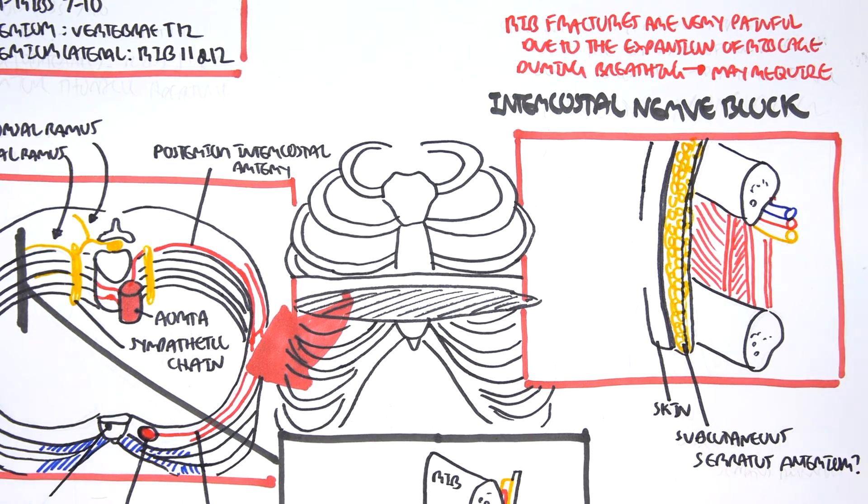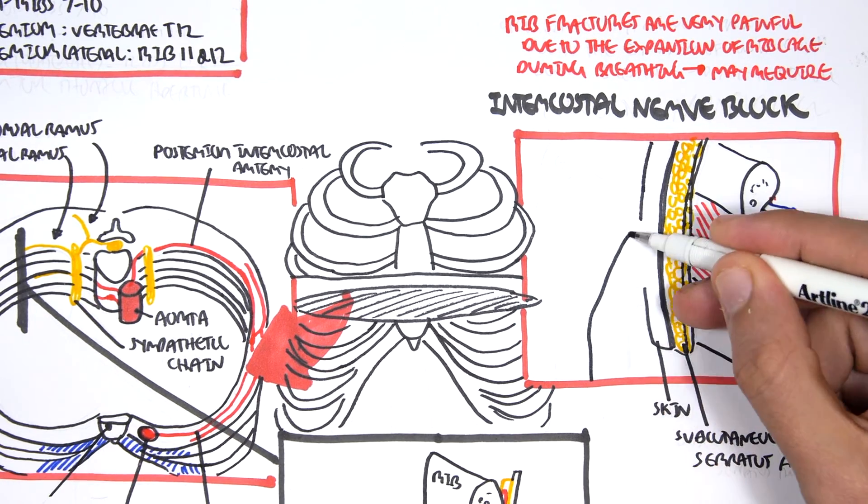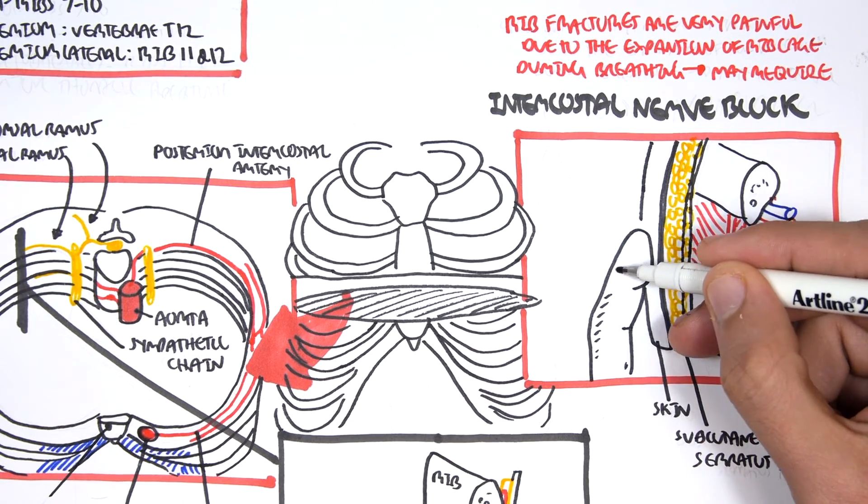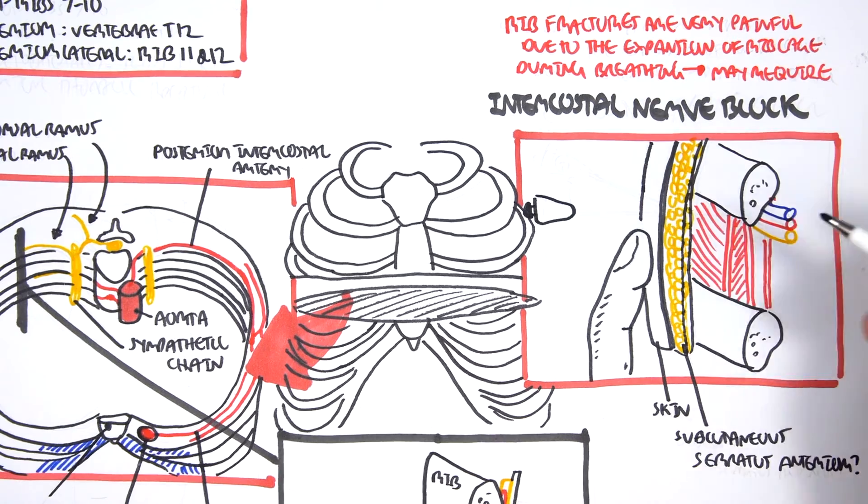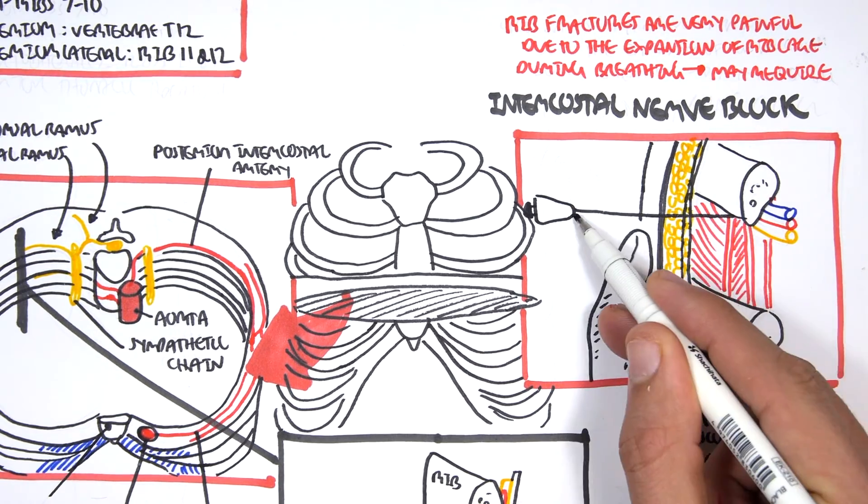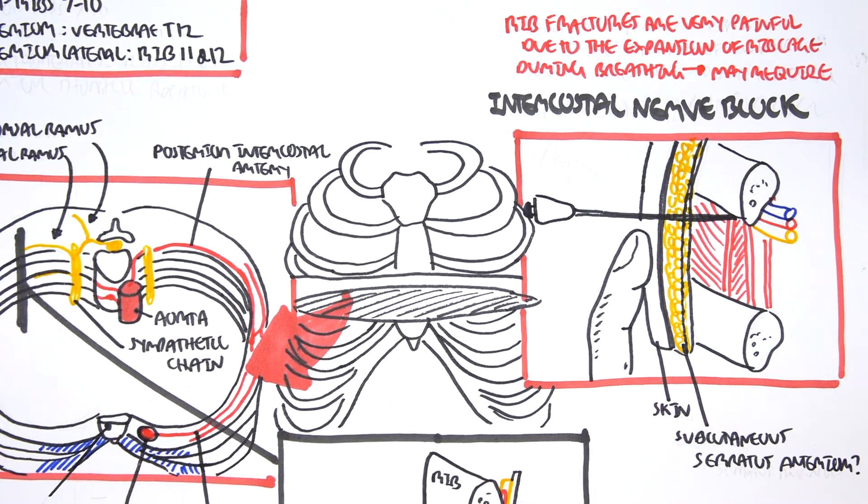And then between the internal intercostal and innermost intercostal is your neurovascular bundle. So the point of the intercostal nerve block is to essentially put a needle around this area to essentially block the nerve so that we don't feel pain. So it is important to know what order the neurovascular bundle is in. And remember, it's VAN from the bottom of the rib. It's vein, artery, nerve. And it's important because we don't want to hit the artery or the vein because then the person can bleed out from within. So we don't want that.